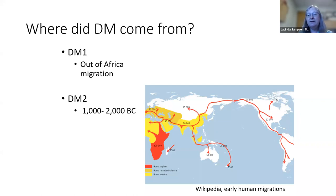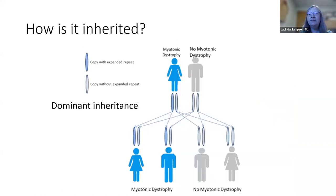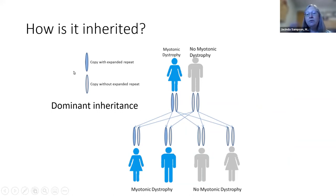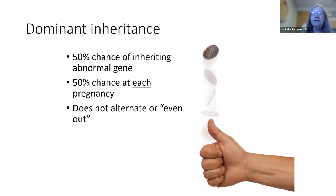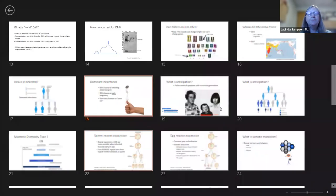Myotonic dystrophy is a dominantly inherited disorder — you only need one abnormal copy of the DMPK expansion gene to have it, which can come from either parent. If you have myotonic dystrophy, each of your children has a 50% chance of inheriting the gene with each pregnancy. It doesn't have to even out — like tossing a coin, it could come up the same way multiple times in a row.